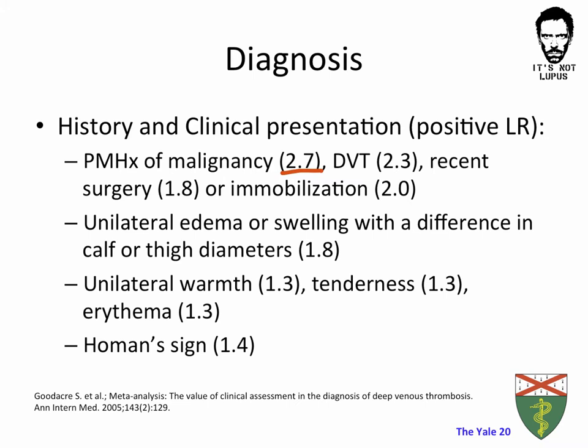Key factors based on history include malignancy, previous surgery or immobilization, or a DVT or pulmonary embolism in the previous medical history. Other key clinical findings are unilateral edema and increased leg circumference of the involved limb, as well as unilateral warmth, tenderness, or erythema. The often-cited Homan's sign — which is pain with dorsiflexion of the ankle — only has a 1.4 positive likelihood ratio, which is not a particularly helpful sign.